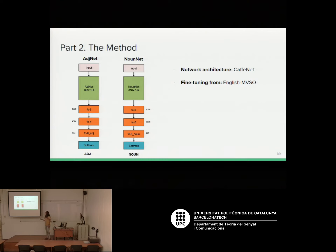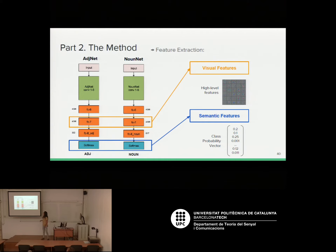The method requires training two networks — one to learn adjectives and one to learn nouns — fine-tuned from a CaffeNet model. From these networks we extract mid-level representations of adjectives and nouns. Depending on the layer, we differentiate between visual features and semantic features. Visual features are extracted from the FC7 layer, used widely in literature as image descriptors giving a global definition of the image. We also propose semantic features, which are the output from the softmax classifier — class probability vectors where each position corresponds to some adjective or noun class and can be translated to a semantic label.